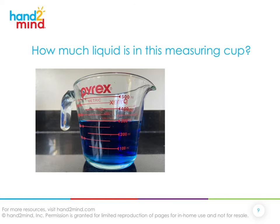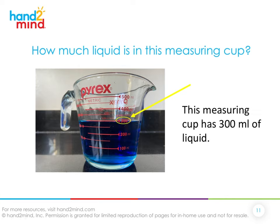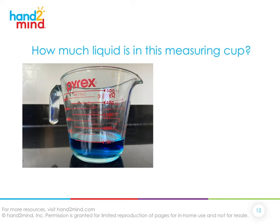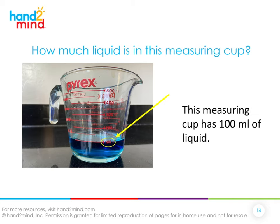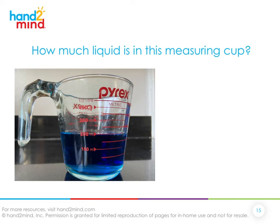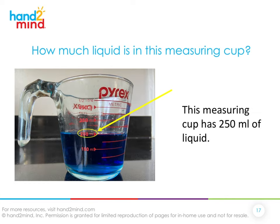If you're given a measuring cup with a certain amount of liquid, can you tell me its volume? Here, the liquid goes up to the 300 milliliter mark, so this measuring cup has 300 milliliters. What about this one? The volume is at the 100 milliliter mark, so there are 100 milliliters. And this one — we're not at 100, 200, or 300, but in between. We see it at 250 milliliters, so this measuring cup has 250 milliliters of liquid.